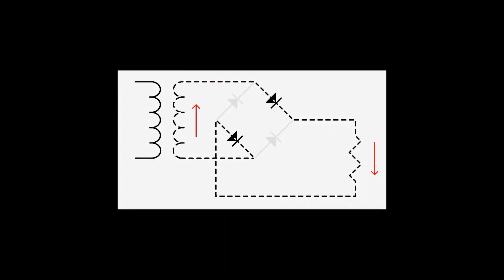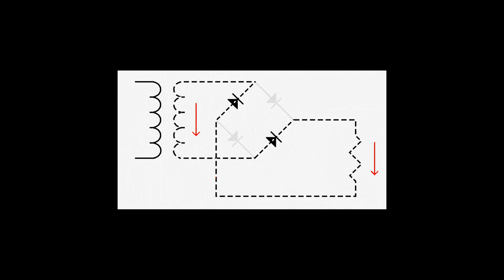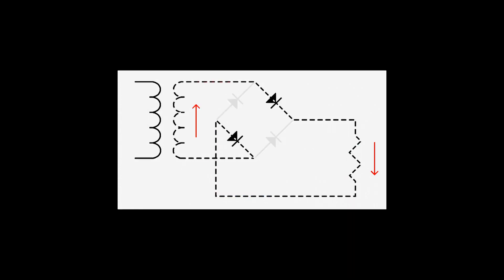So here we have the current repeatedly changing direction in the transformer secondary, but the current through the load and the voltage polarity across it stayed the same.